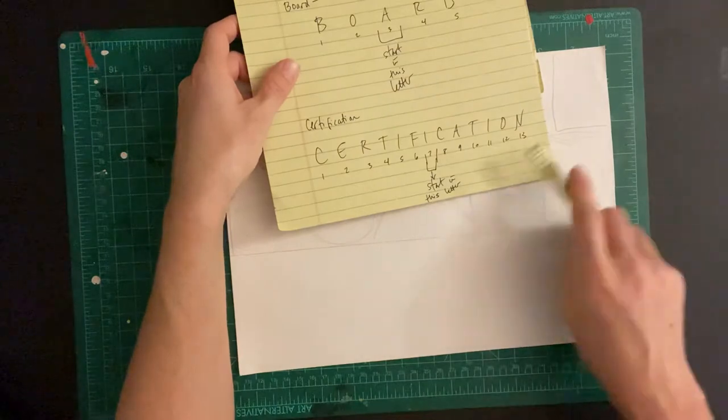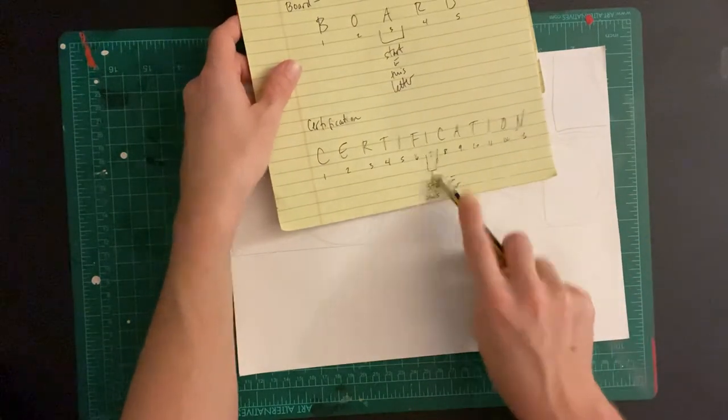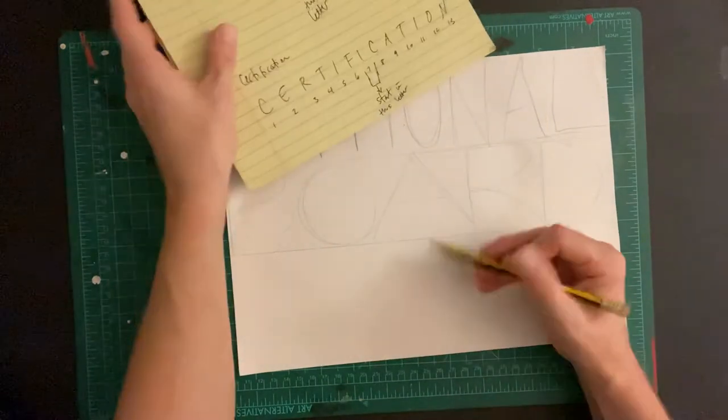And now certification, which is kind of a doozy. It has 13 letters. So I'm going to start with number seven, which is the letter I.